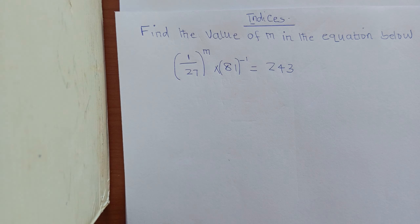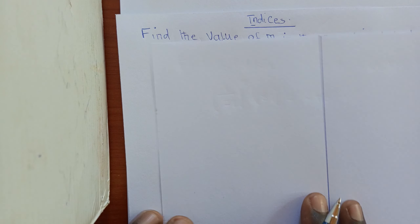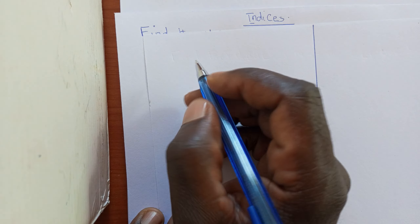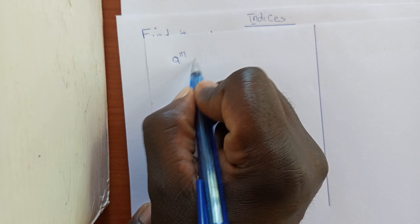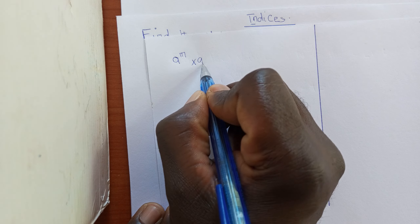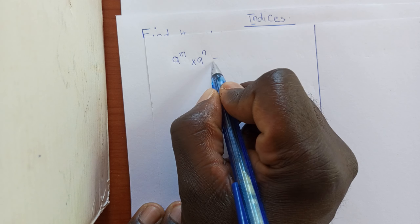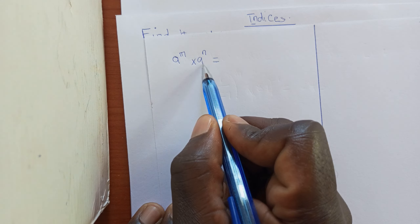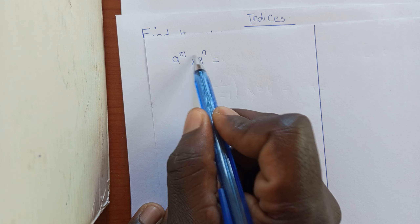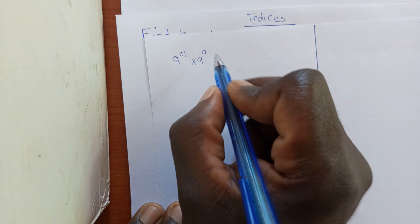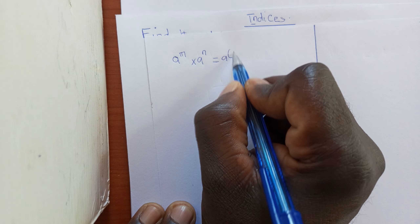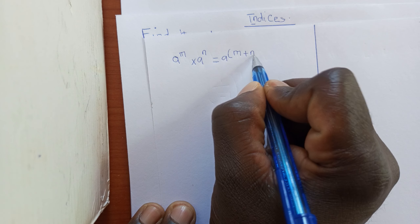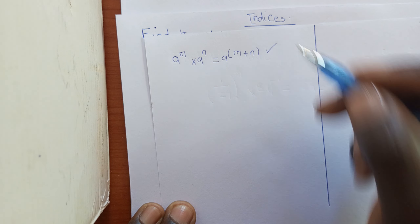We need to remember the laws of indices. The first law: if we have A raised to M times A raised to N — when we have the same base with different powers — the multiplication changes into addition of the powers. So this equals A raised to M plus N.